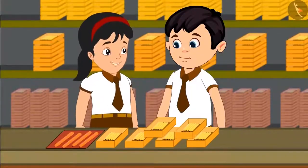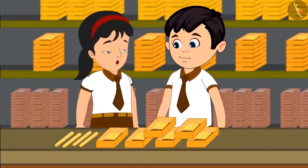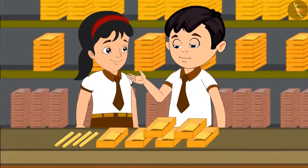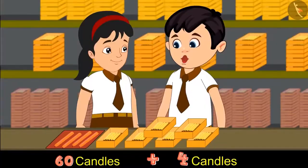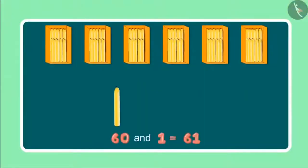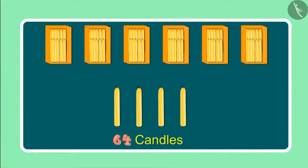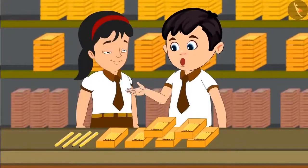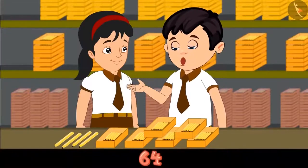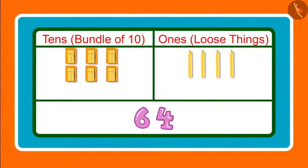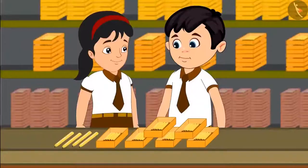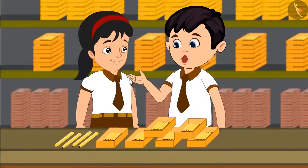Chotu, look there are 4 more candles. Please count these as well. We have 6 boxes of candles here which means 60 candles and 4 more along with these comes to 61, 62, 63 and 64. These are 64 in total. Pinky, can you tell me how many ones and tens are there in 64? Yes, 64 has 6 tens and 4 ones. Excellent, you are absolutely correct.